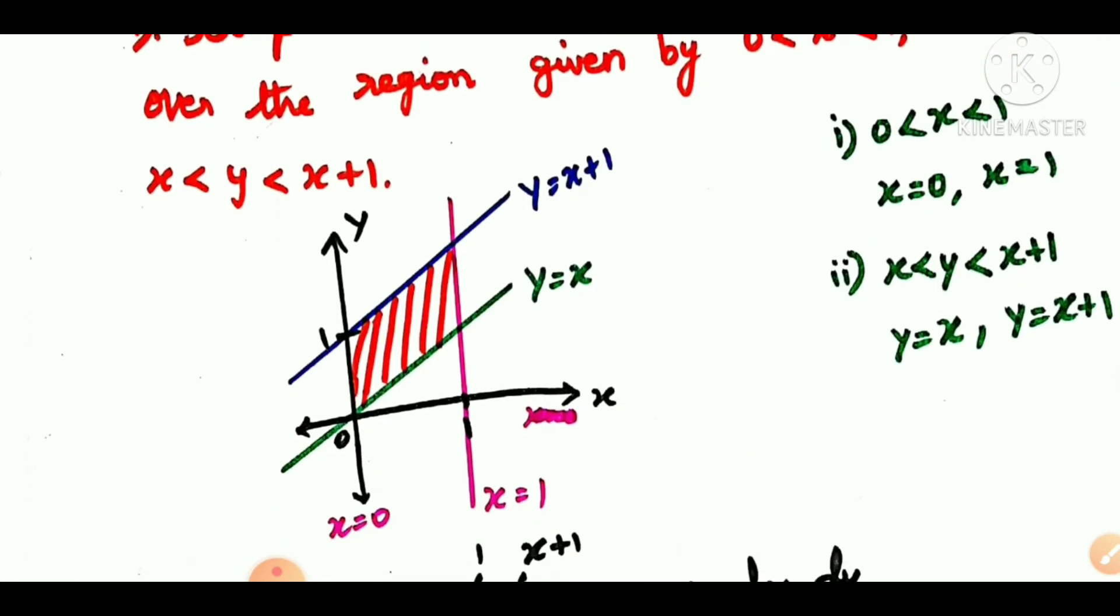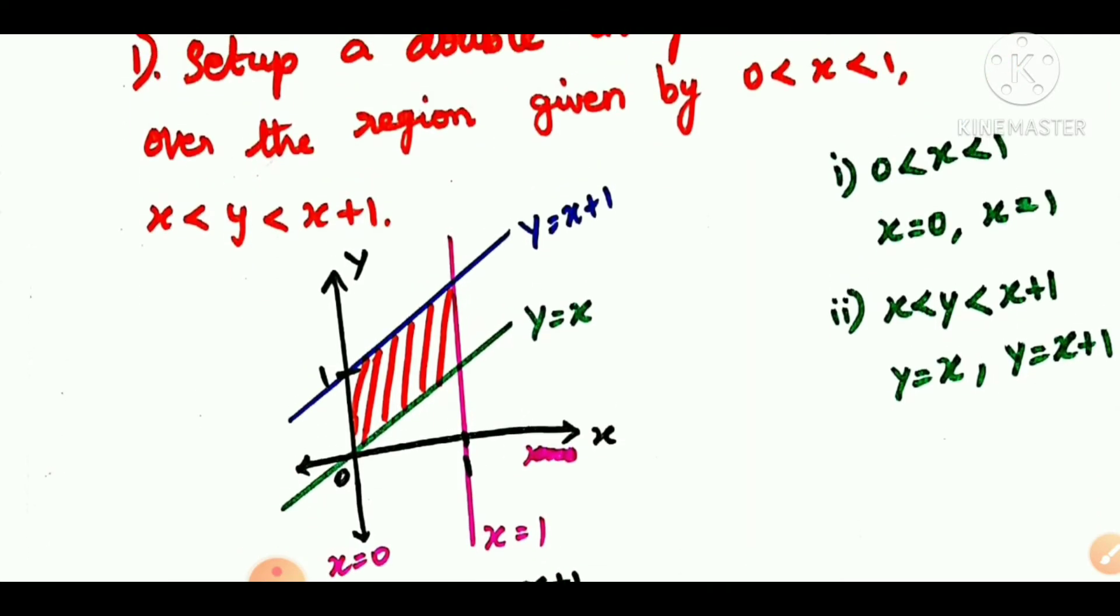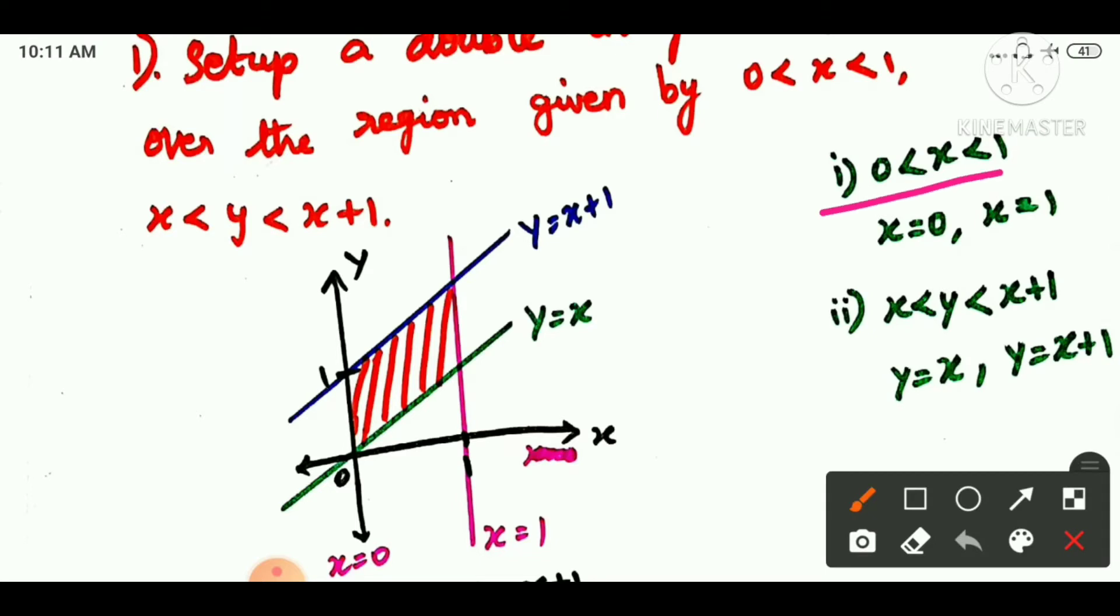First, how do we do it? We have x and y values. We have 0 less than x less than 1. So x equals 0 and x equals 1. x equals 0 is the y-axis line. x equals 1 is a vertical line at x equals 1 on the x-axis.